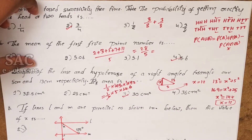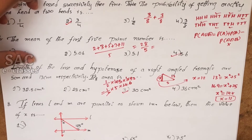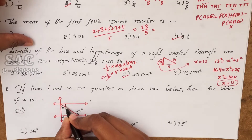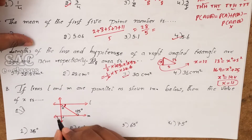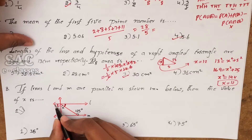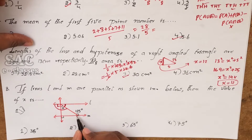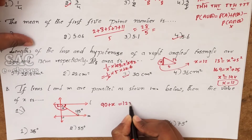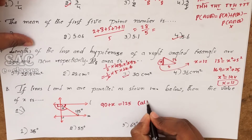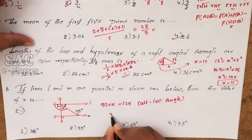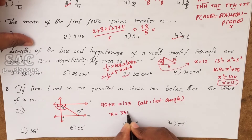Look at problem number 8. If lines L and M are parallel, find the value of X. Using alternate interior angles: the 90° angle is alternate interior with 90°, and that total is alternate interior with 125°. So 90 + X = 125, giving X = 35 degrees. Option 1.